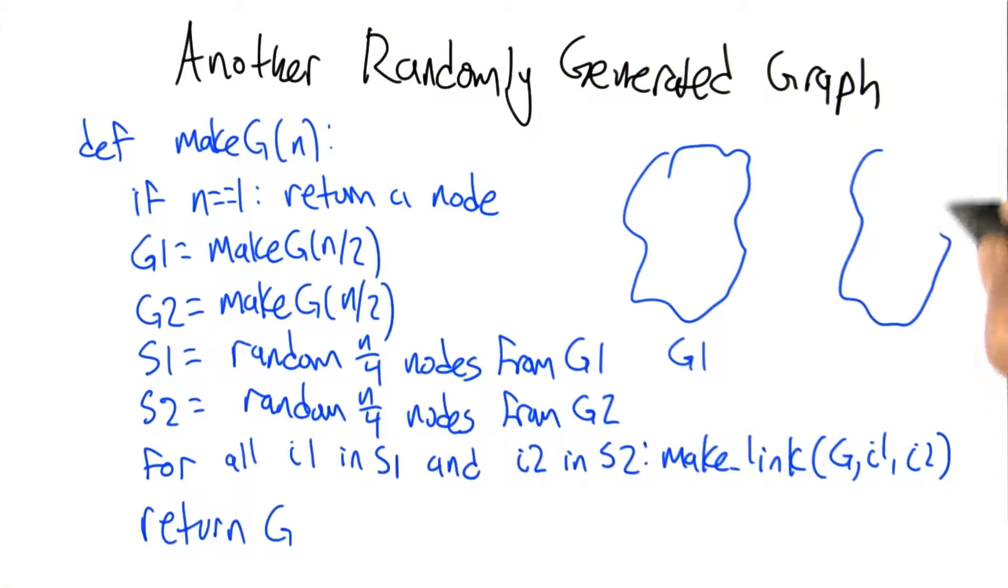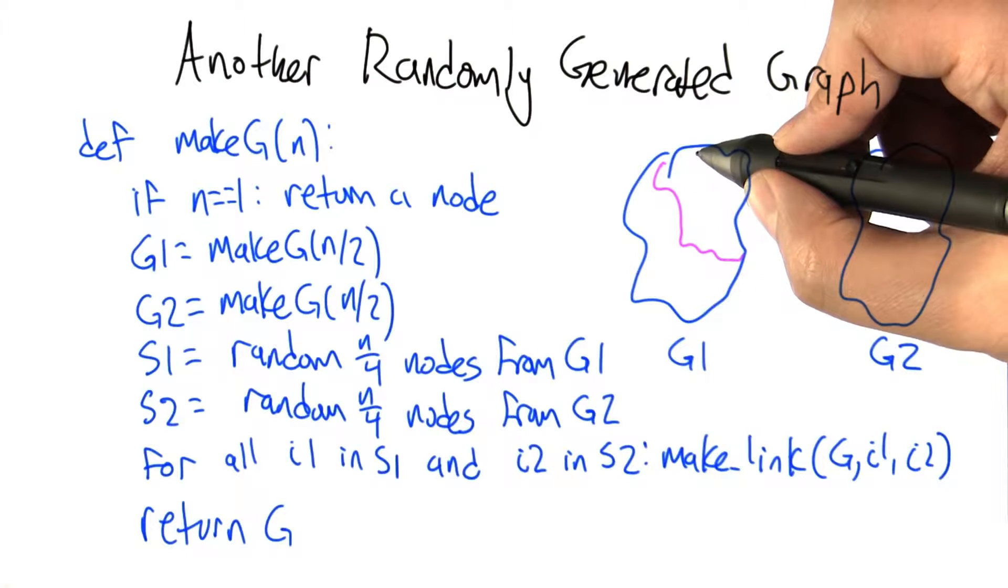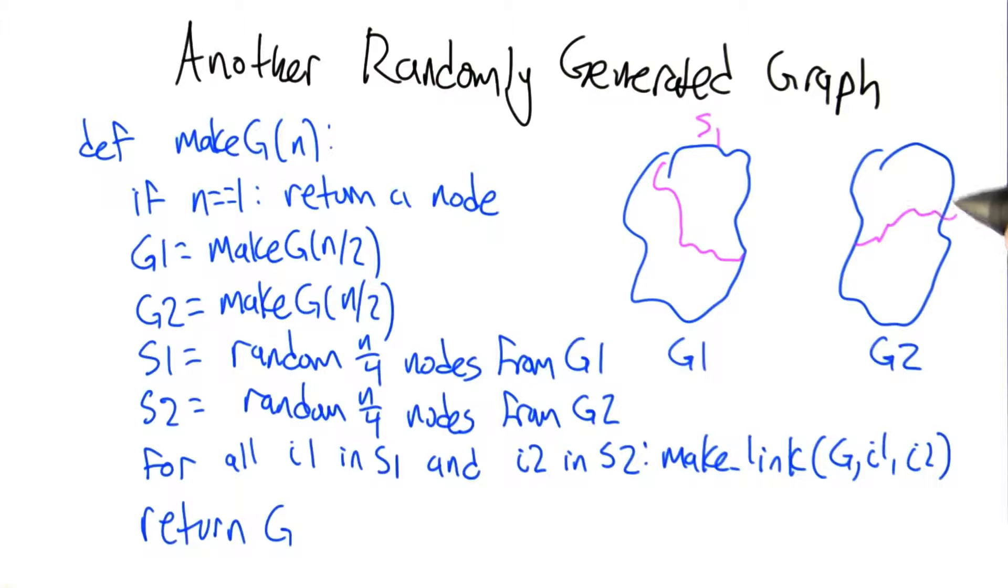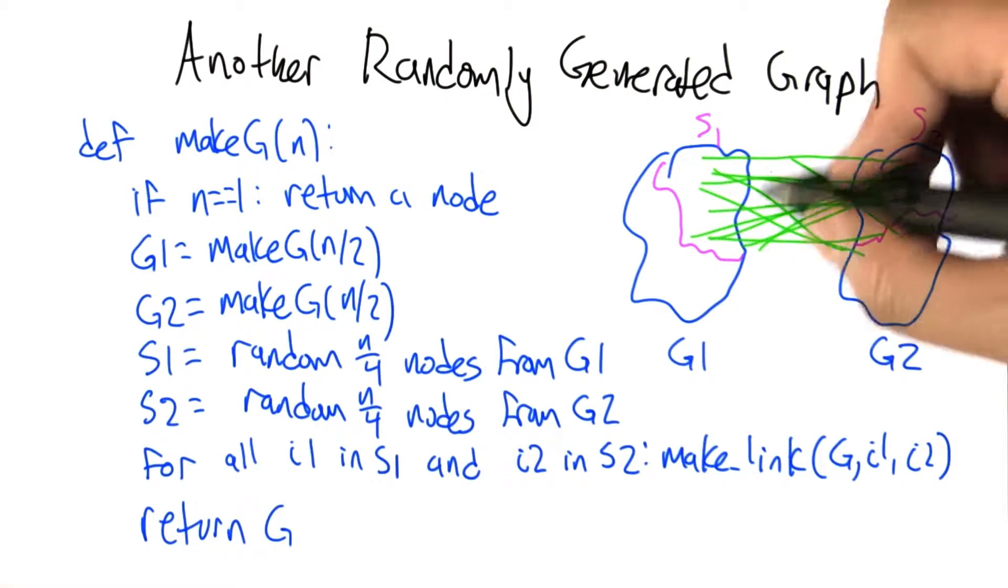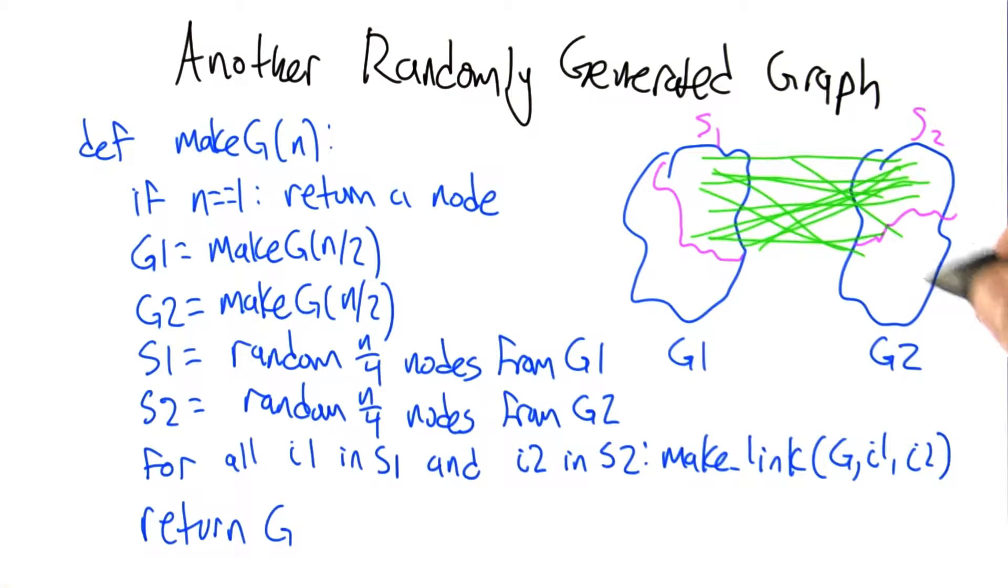So we have some graph G1, we have some graph G2. We choose half of the nodes at random to be called S1. We choose half of the nodes at random in this graph to be S2. And then we connect up all pairs so that every single node up here is connected to every single node up here. It gets very densely connected here but kind of much looser elsewhere.